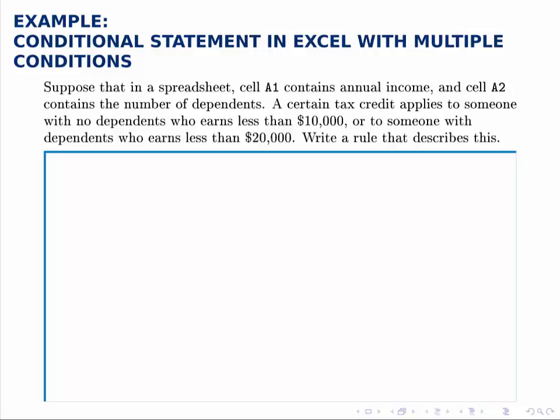Let's break this down and think about this logically. The tax credit will apply to one of two types of people: someone with no dependents and income less than $10,000, or someone with dependents and income less than $20,000.